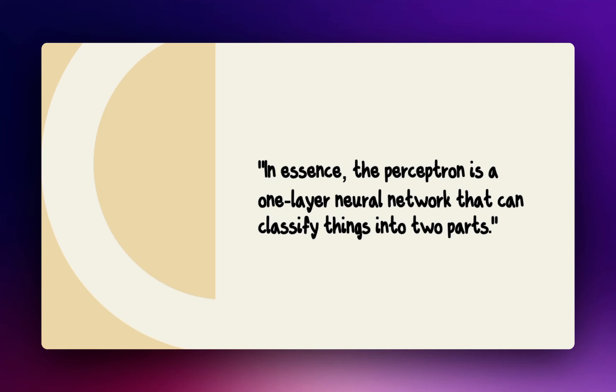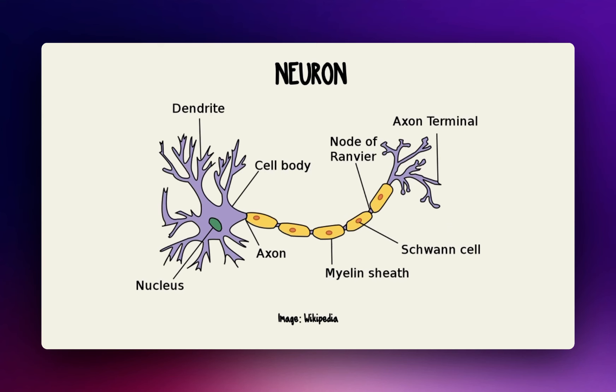In essence, the perceptron is a one-layer neural network that can classify things into two parts. It is inspired by biological brain units called neurons.